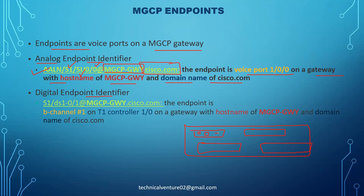Under a subunit you have a particular interface for that port. Combined, this is called voice port 1/0/0 on a gateway with the hostname and domain name. Make sure you are using the same hostname on the gateway as well as on the CUCM gateway configuration — only then will they be able to communicate with each other.